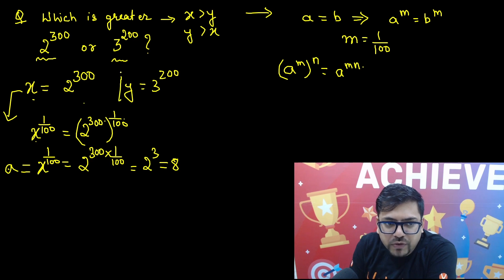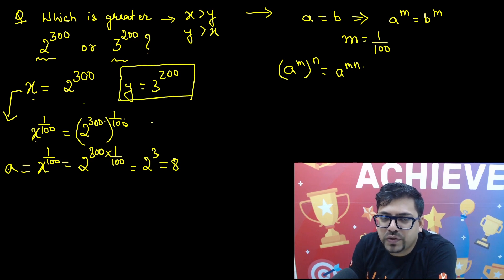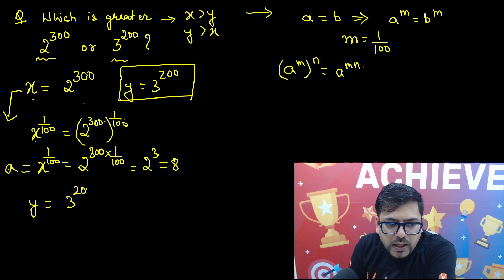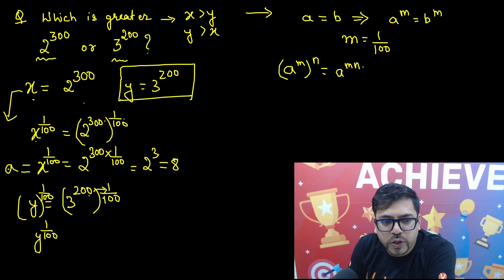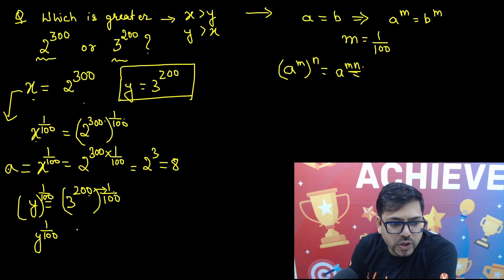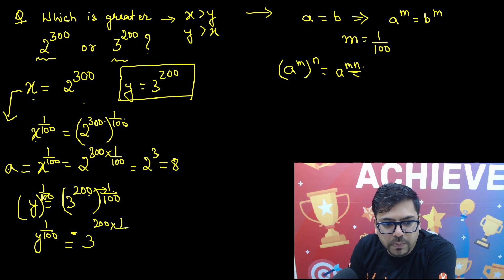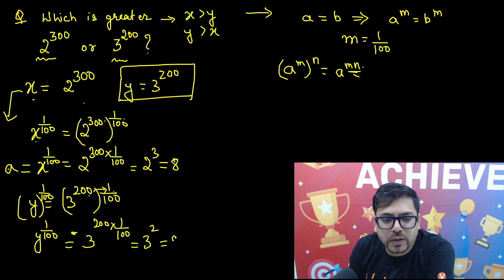Now similarly, if I do the same thing for the second number, y equals 3 raised to power 200. Take both sides to the power 1 upon 100. You get y raised to power 1 upon 100, and both powers get multiplied: 200 into 1 by 100. So this gives 3 raised to power 2, which is equal to 9.